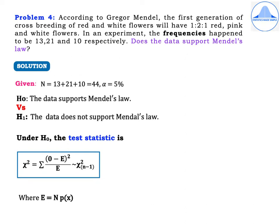Problem 4: According to Gregor Mendel, the first generation of cross-breeding of red and white flowers will have a 1:2:1 ratio of red, pink, and white flowers. In an experiment, the frequencies happen to be 13, 21, and 10 respectively. Does the data support Mendel's law? As a short note, Gregor Mendel is known as the father of genetics, but he was remembered as a gentleman who loved flowers and kept extensive records of weather and stars when he died.